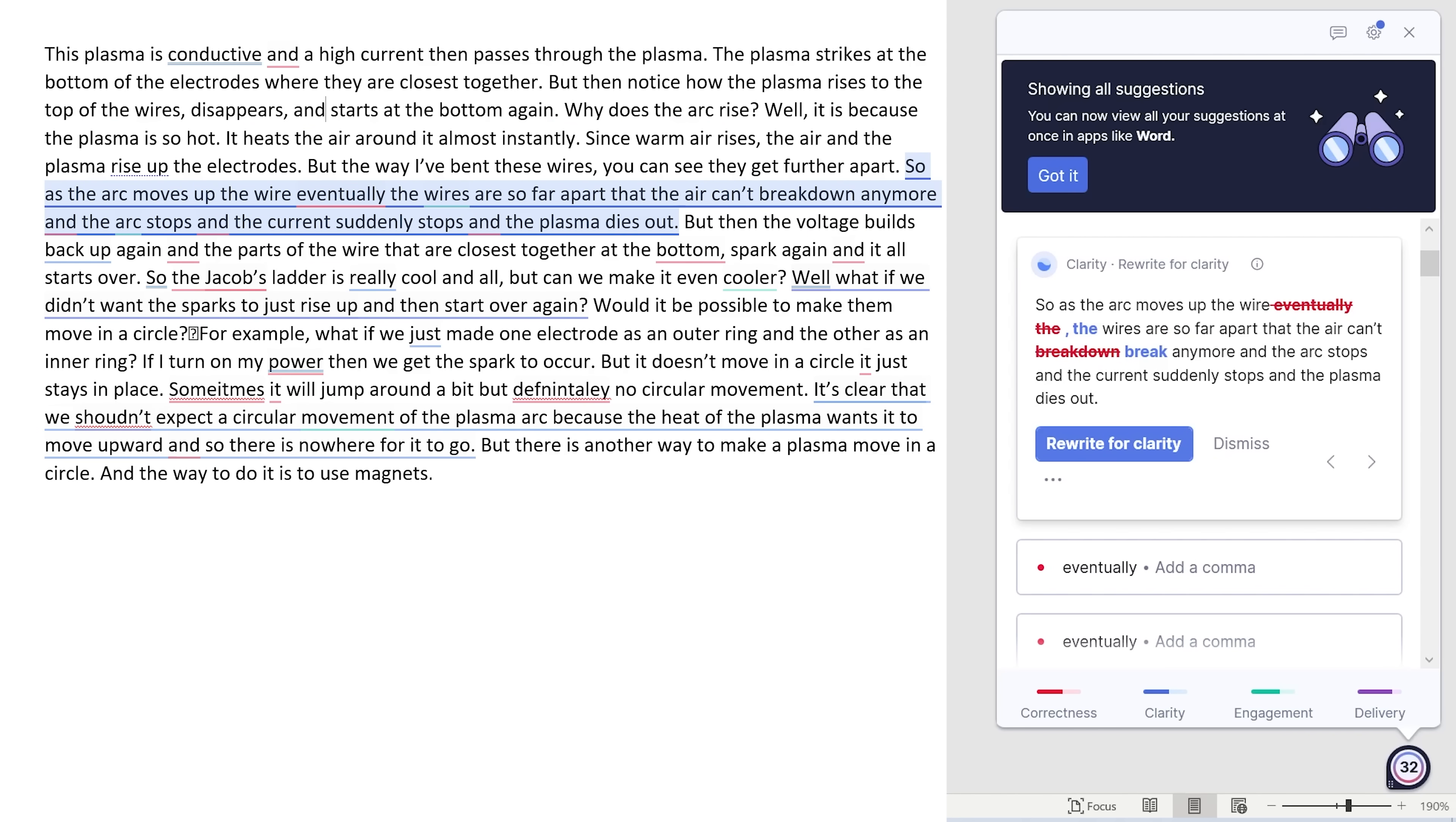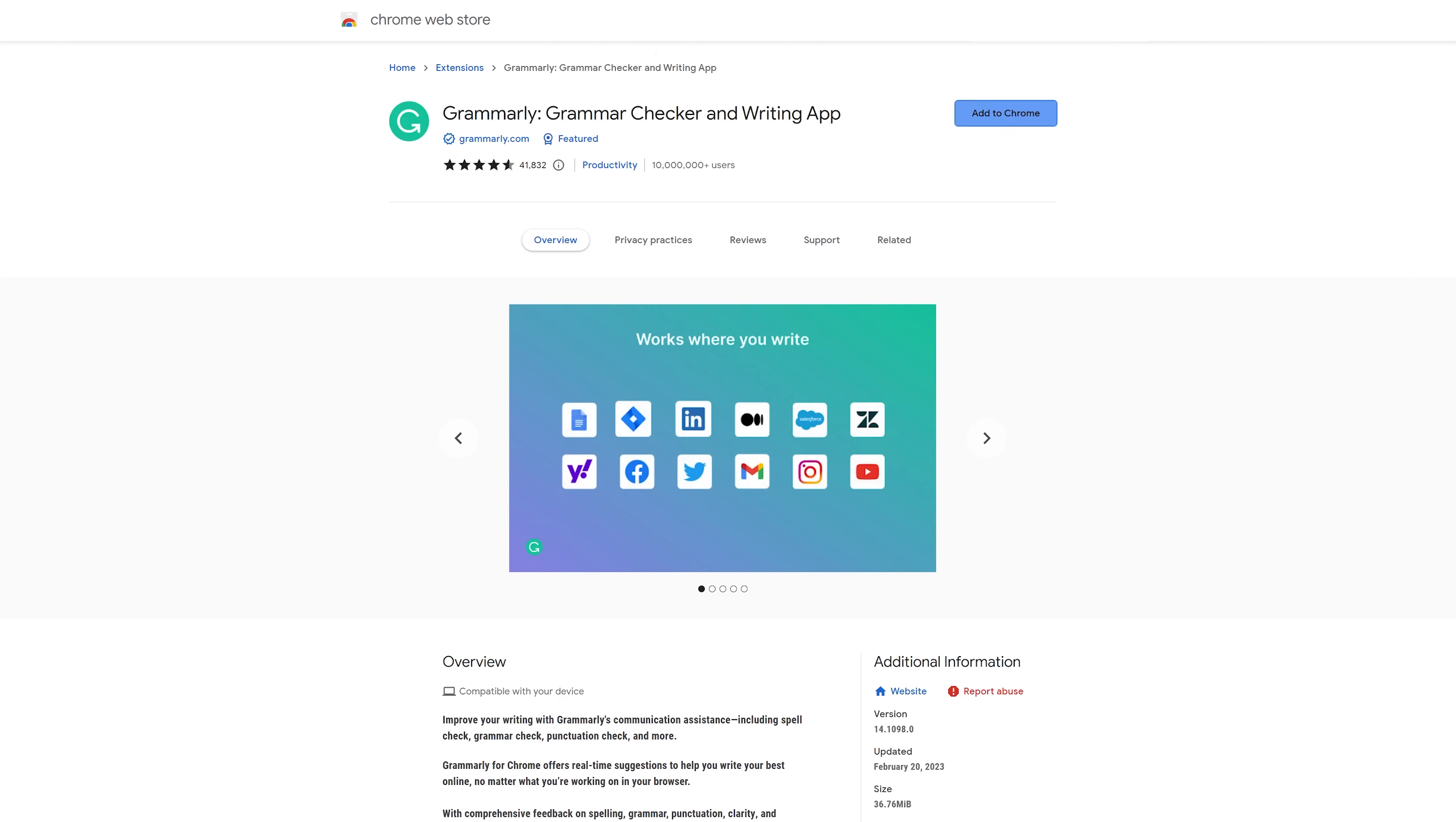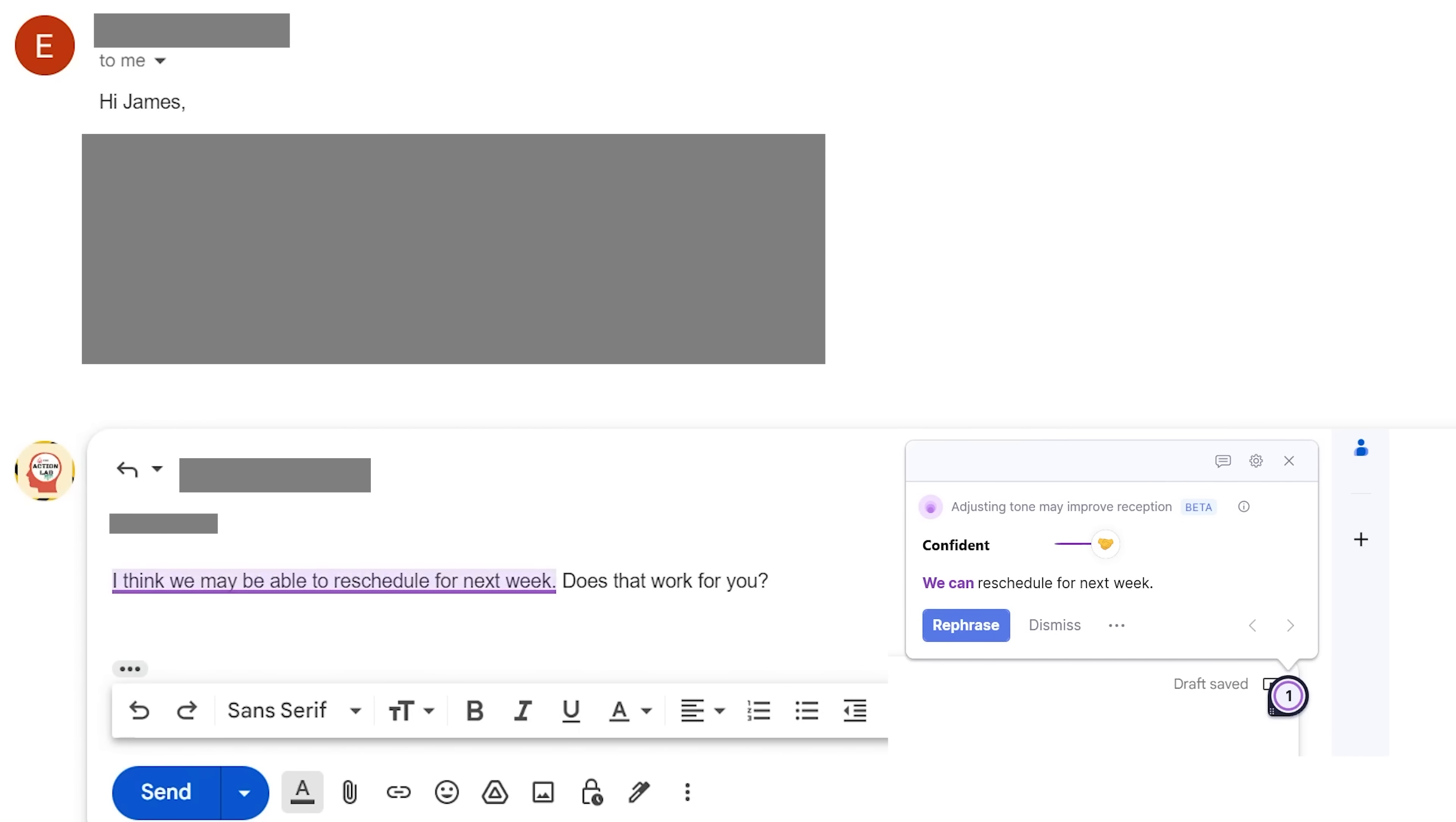Grammarly is easy to use across different platforms, including browser extension, desktop editor, and mobile keyboard app. What I love about Grammarly is it even has tone rewrite suggestions that can help you be more confident in your writing and emails. For example, in this email, I unintentionally sound unconfident, but Grammarly can help you fix it so you sound more confident in your communications.